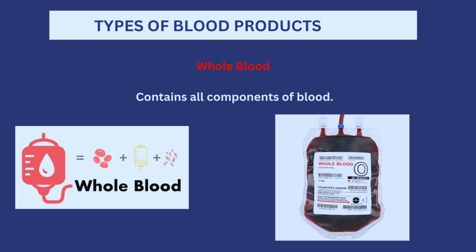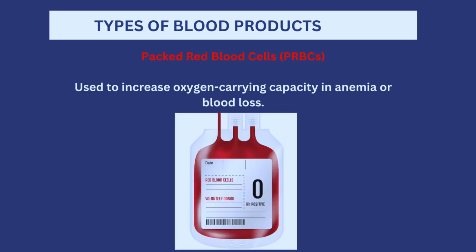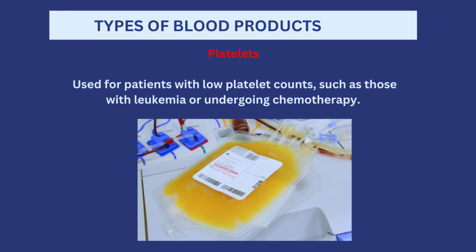There are different types of blood products that may be transfused depending on why the patient needs it. The first type is whole blood, which contains all components — red blood cells, white blood cells, plasma, platelets, and everything in the blood. Next are packed red blood cells; hemoglobin is present on red blood cells and is what oxygen binds to for transport, so packed red blood cells are transfused to increase oxygen-carrying capacity in cases of anemia or large blood loss.